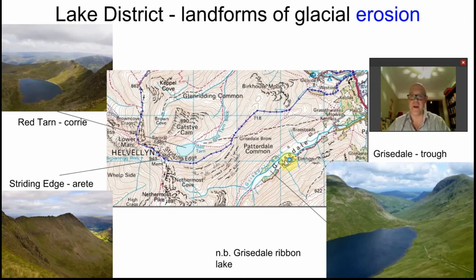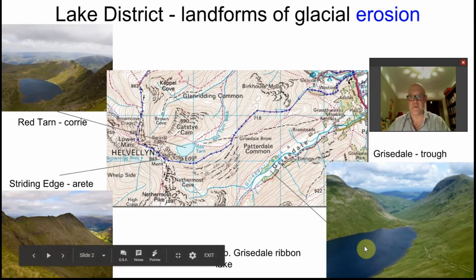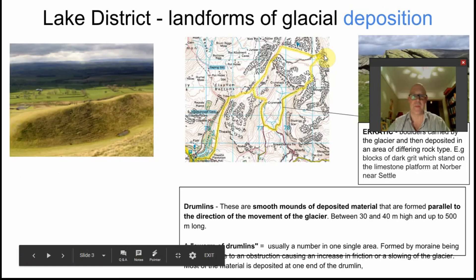And then finally, a glacial trough in terms of erosion features — a flat bottom, steep sided valley. Very, very clear. You can see Grisdale. And here's one with a Ribbon Lake in there — bit of a cheat, there isn't one all the time.